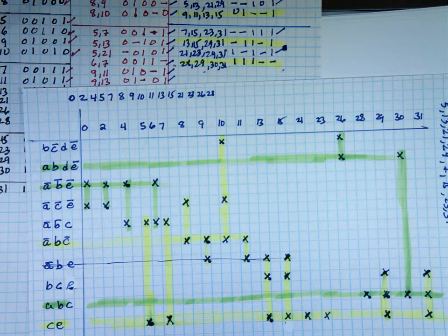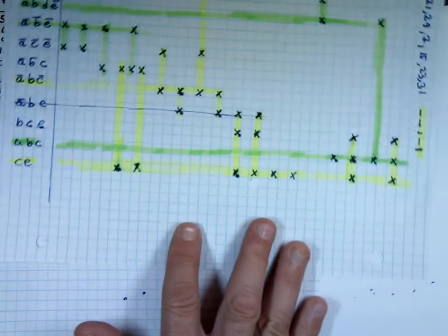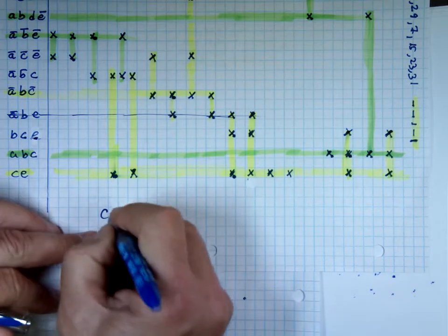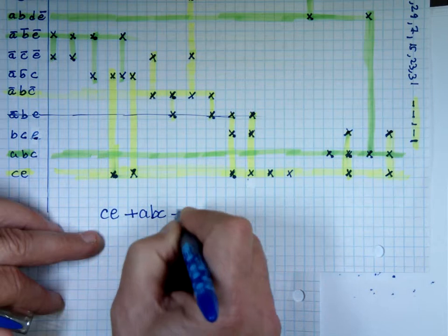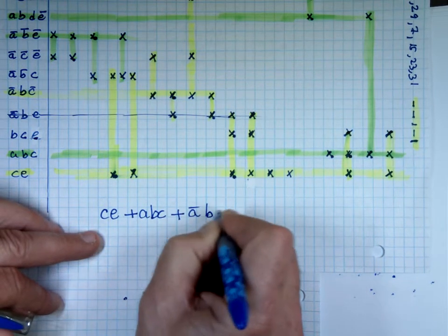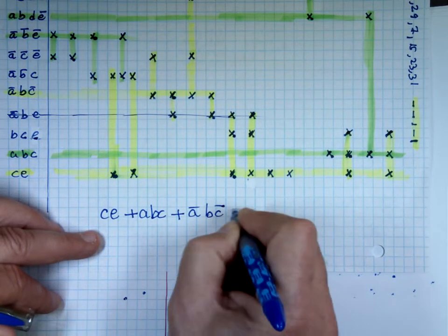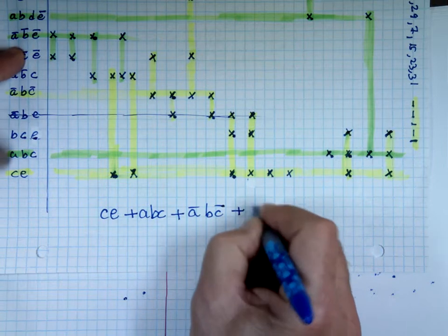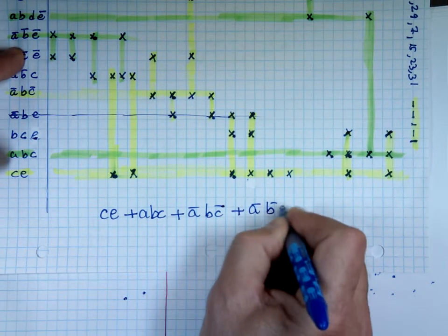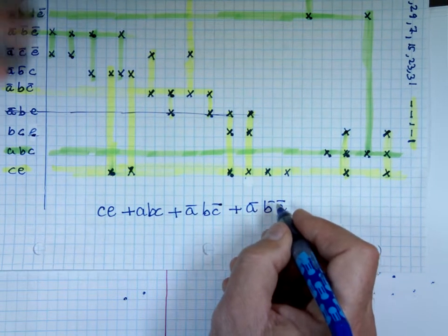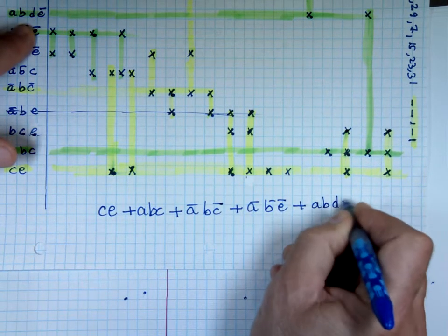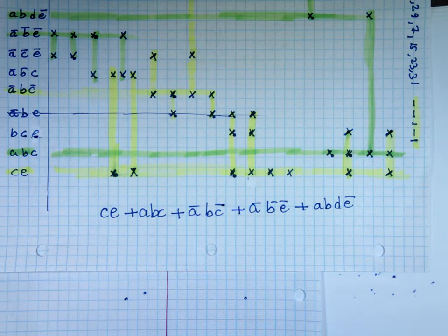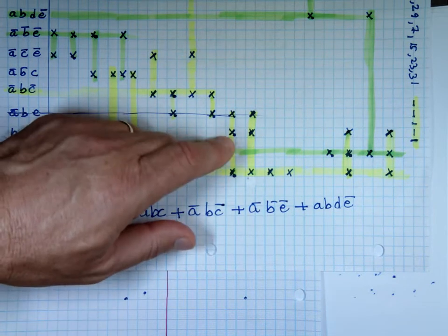That's it. Five terms. So the answer to this will be: CE, plus ABC, plus A bar B C bar, plus A bar B bar E bar. And again, you can use either one of the top ones: A, B, D, E bar. But these two bottom ones — I did not have a choice. I had to take them.